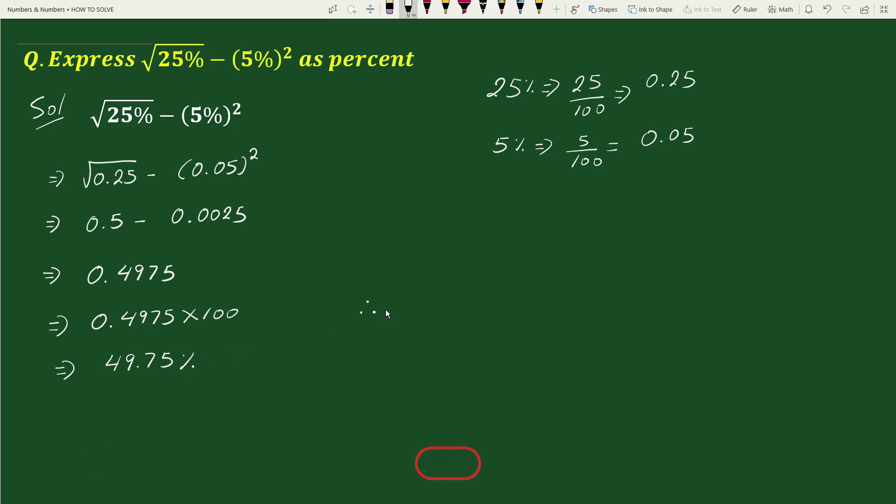Therefore, square root of 25% minus 5% whole square equals to 49.75 percent. This is our solution. Question 9.